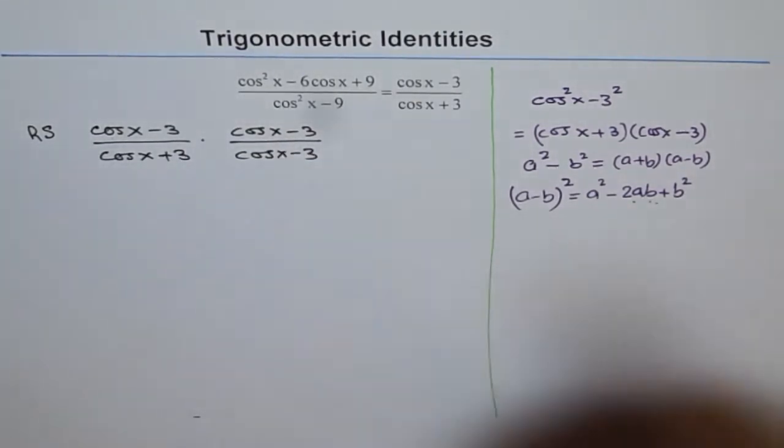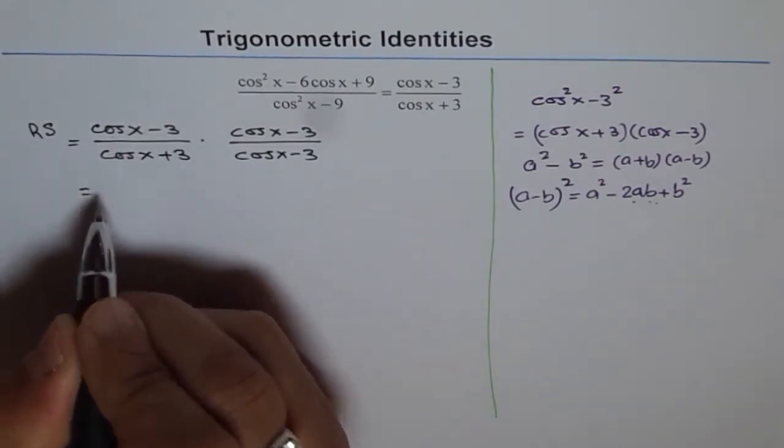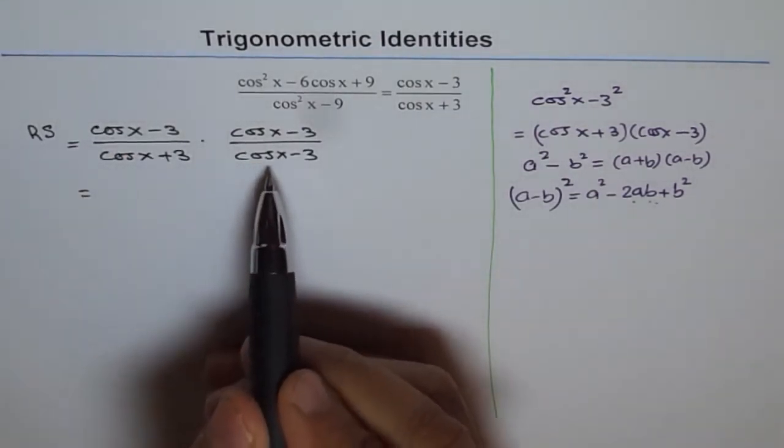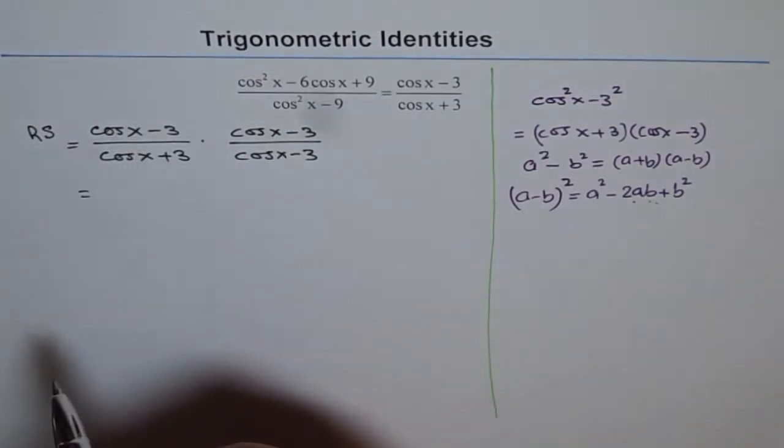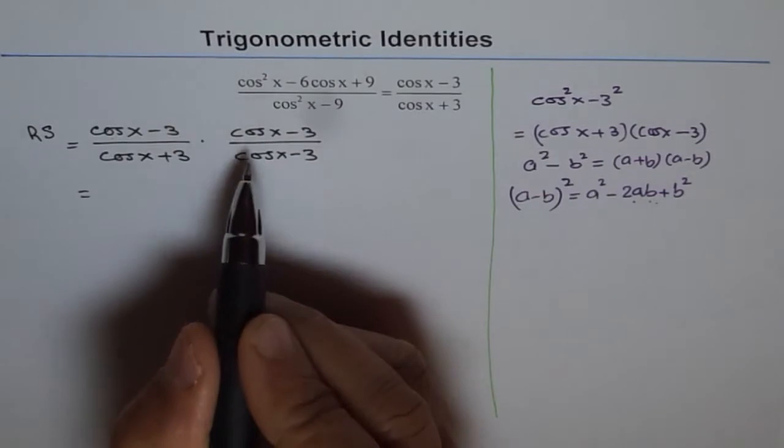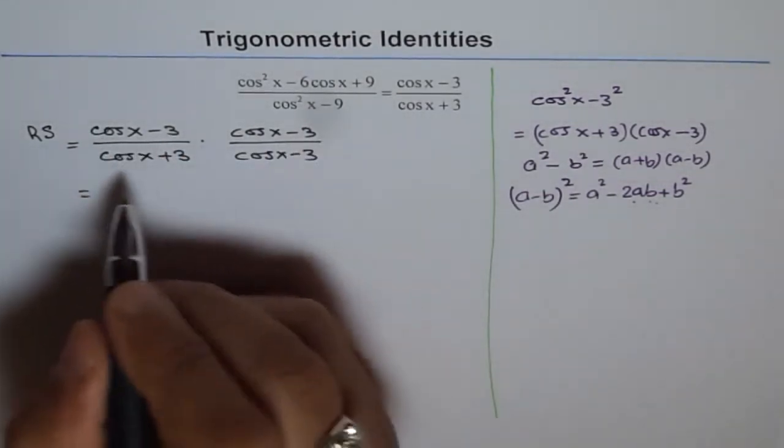So it is like multiplying by 1. So right hand side is equal to this and when I do this, that means I am multiplying and dividing by cos x minus 3, both numerator and denominator. So in the numerator, I get cos x minus 3 whole square.